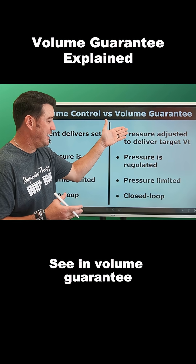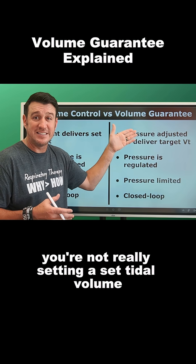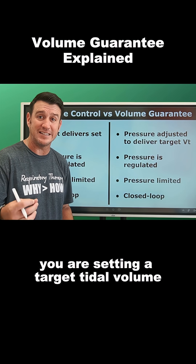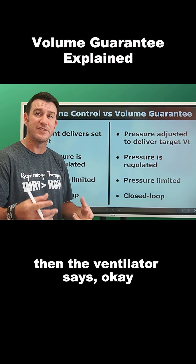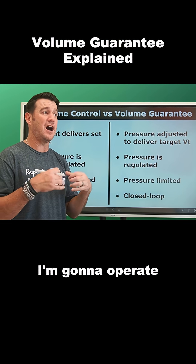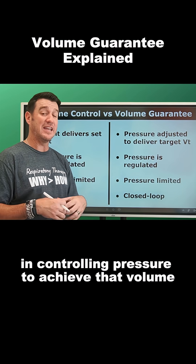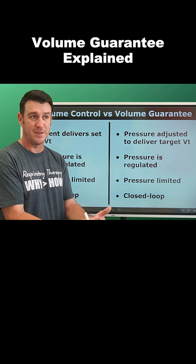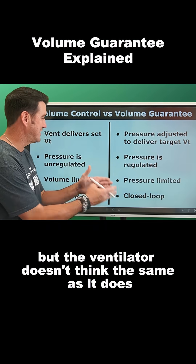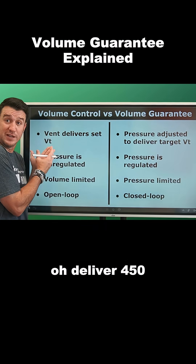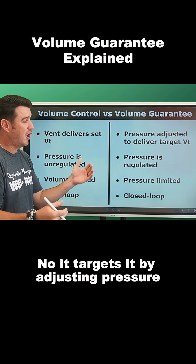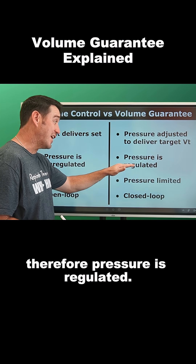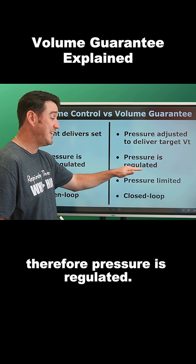In volume guarantee, you're not really setting a set tidal volume — you're setting a target tidal volume. Then the ventilator says, okay, I'm going to operate by controlling pressure to achieve that volume. But the ventilator doesn't think the same as it does in volume control, where it just delivers 450 milliliters. No, it targets it by adjusting pressure. Therefore, pressure is regulated.